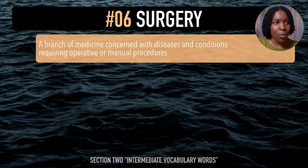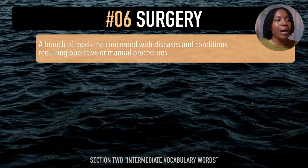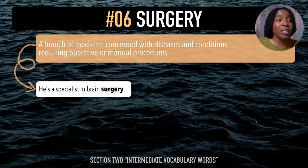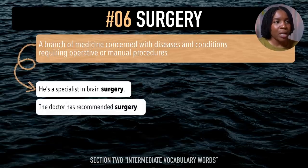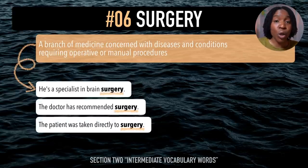The next intermediate vocabulary word is 'surgery'. After me — surgery. This is a branch of medicine concerned with diseases and conditions requiring operative or manual procedures. Example sentences: He's a specialist in brain surgery. The doctor has recommended surgery. The patient was taken directly to surgery. That 'juh' sound — last time — surgery.